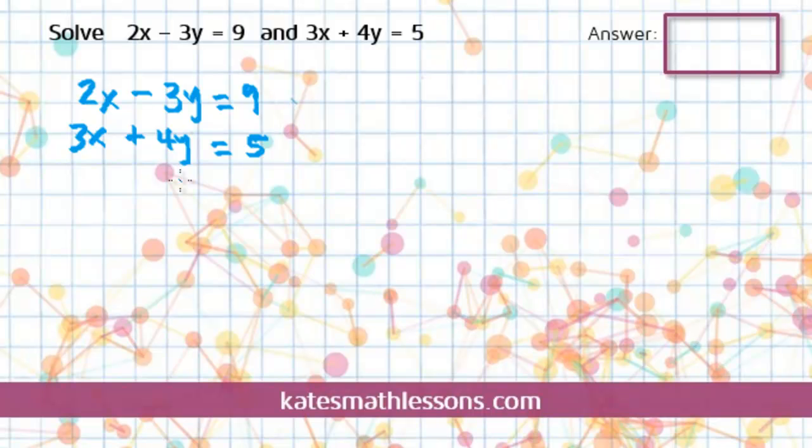So we need to figure out how we can fix this system so that something will cancel. Now you can pick to try to either get the x's to cancel or the y's to cancel. It doesn't matter. You'll get the same answer either way. So you want to pick the variable that looks the easiest. In this case, it's going to take about the same amount of work to get either one to cancel. Let's try to get the x's to cancel.